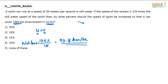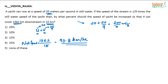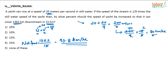What is the net speed we have right now? The yacht can go at 20 meters per second in still water, so U = 20 m/s. V is 1/9 of that, which is 20/9 m/s. The net speed is 20 + 20/9 = 200/9 meters per second. Converting to km/h: 200/9 × 18/5 = 80 kilometers per hour.